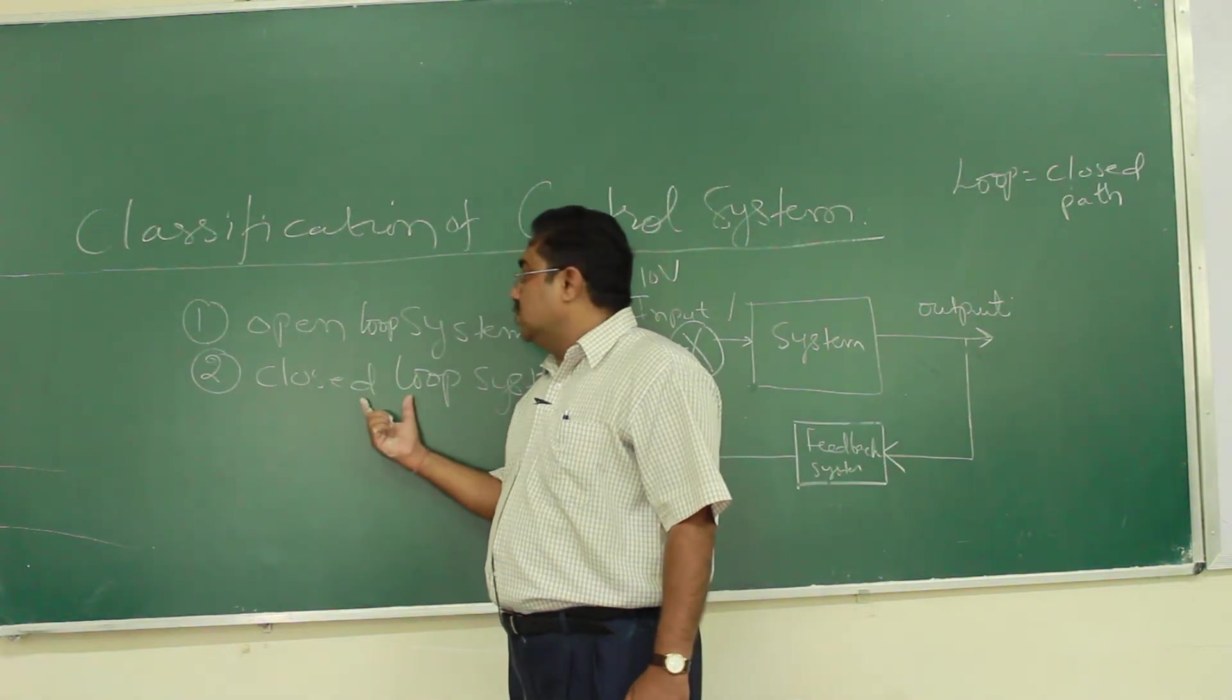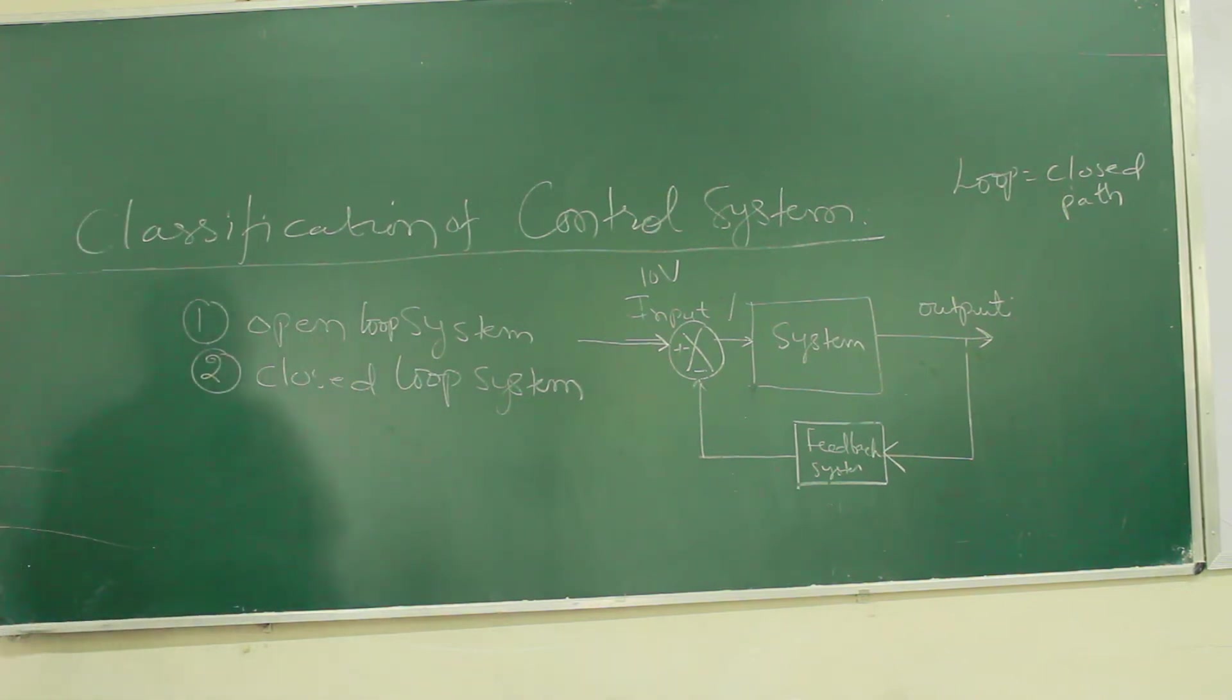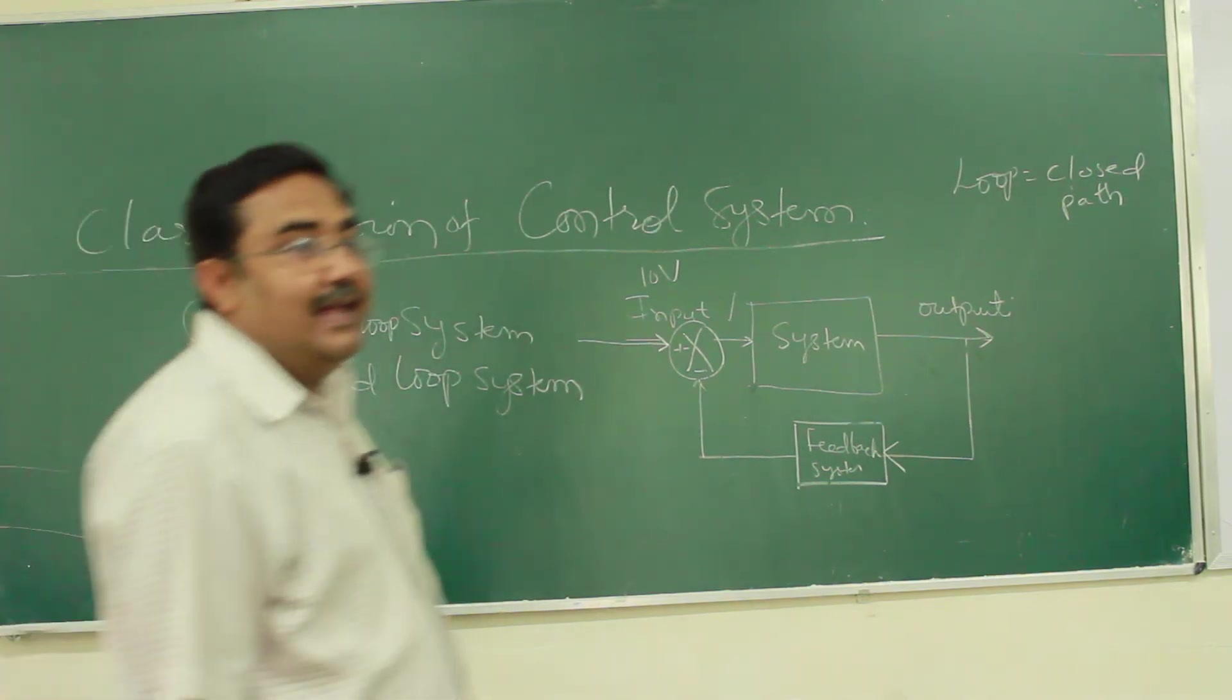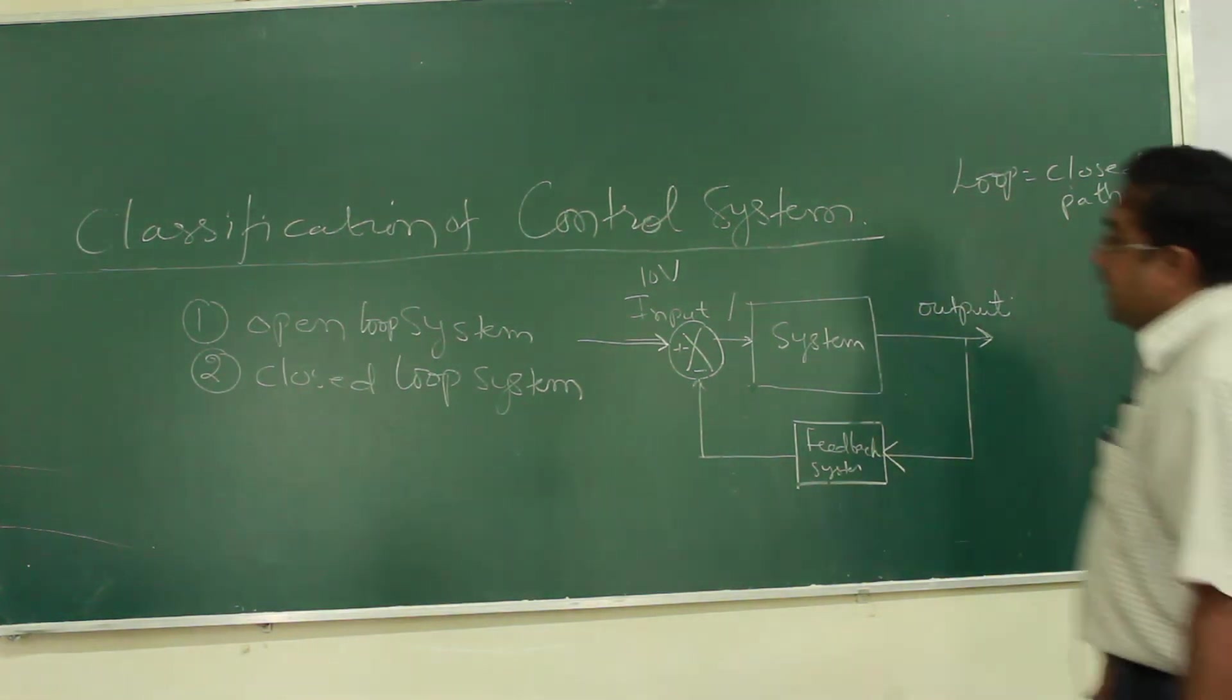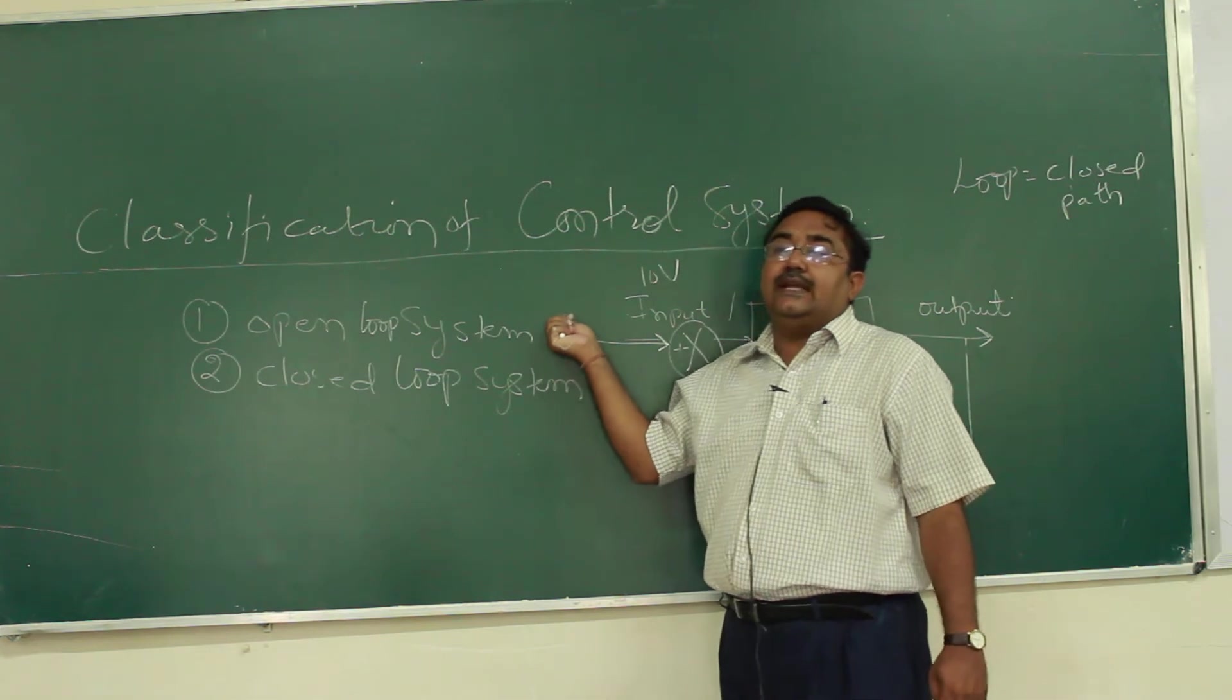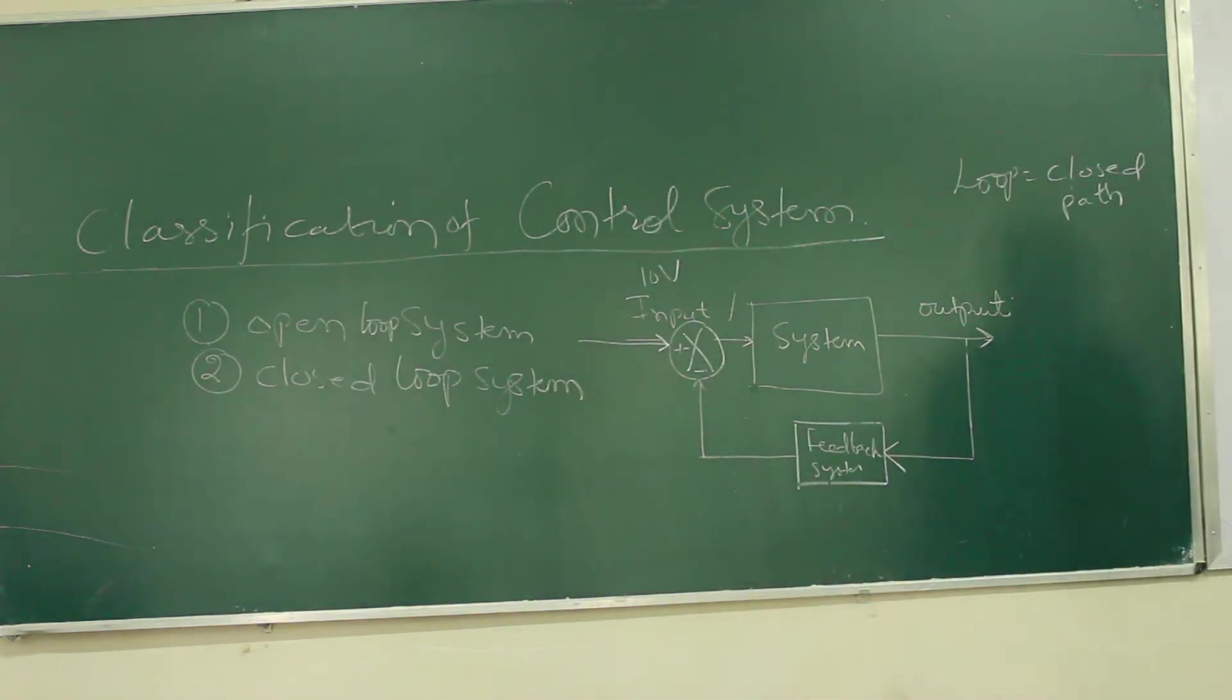The view of closed-loop system over open-loop system is that the error is negligible. We get a desired output for a given input. For open-loop system, we may or may not get the desired output. This definition is clear for open-loop system and closed-loop system.